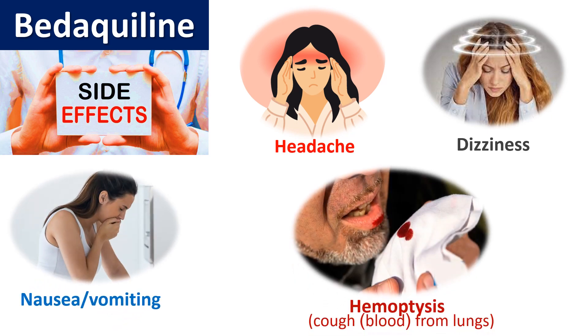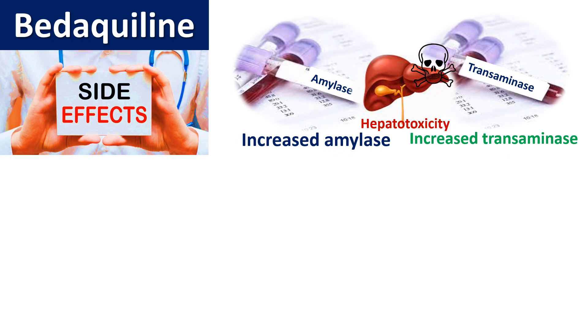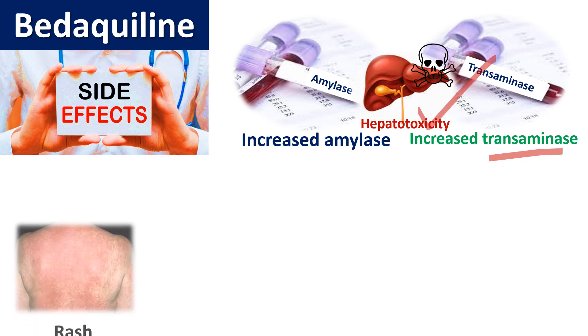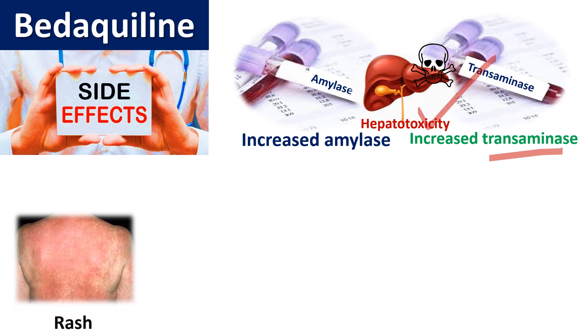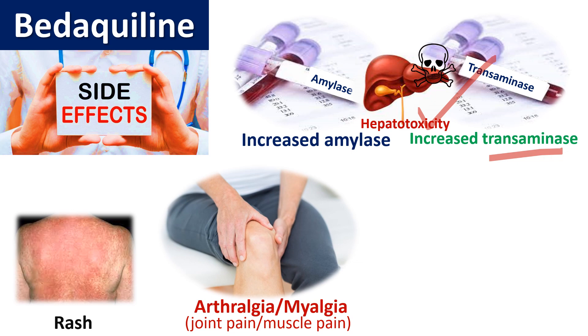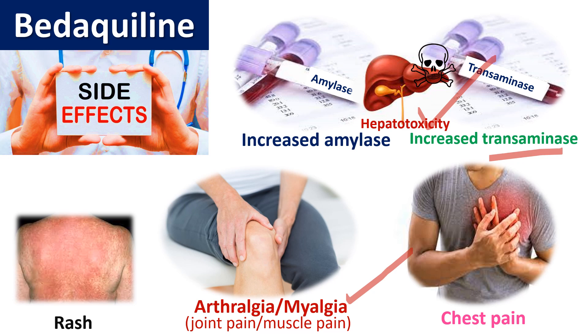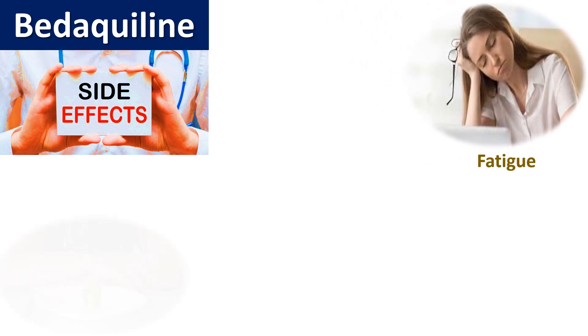Side effects also include increased amylase and increased transaminase activity, which are indicative of hepatotoxicity. Rashes may occur in some patients. Arthralgia and myalgia may develop, characterized by joint and muscle pain. Chest pain may also be observed with Bedaquiline intake.